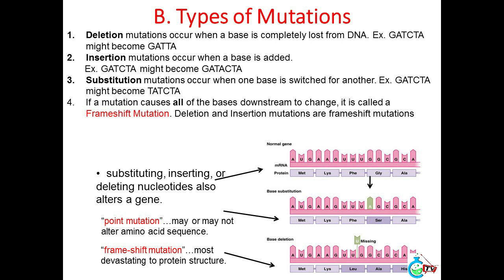Insertion mutations occur when a base is added. Example: GACTA might become GAACTA. Substitution mutations occur when one base is switched for another. Example: GACTA might become TACTA. If a mutation causes all of the bases downstream to change, it is called a frameshift mutation. Deletion and insertion mutations are frameshift mutations. Substituting, inserting, or deleting nucleotides also alters a gene. Point mutation may or may not alter the amino acid sequence; frameshift mutation is most devastating to protein structure.